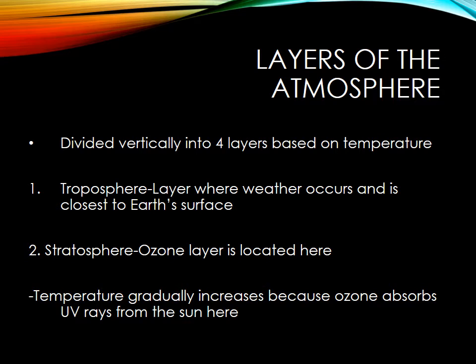Temperature increases in the stratosphere because the ozone absorbs UV rays from the sun. In the troposphere we don't have as many UV rays because the stratosphere blocks them. The reason it can block ultraviolet rays is that ozone is made up of O3, and ultraviolet rays can't get through O3. So O3 is good to have in the stratosphere — however, in the troposphere, O3, which is ozone, is actually bad.